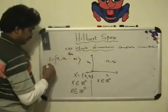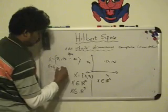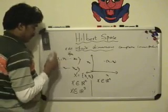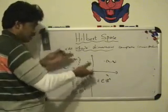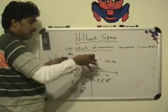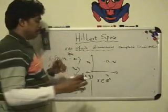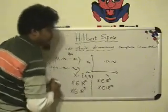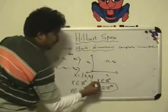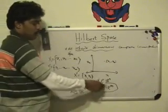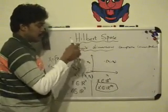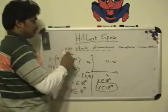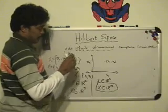And if we take n going to infinity — imagine expanding this into an infinite dimensional space — then x belongs to R^infinity. So this is basically an infinite dimensional space: x belongs to infinite dimensional space. So again, Hilbert's space is an infinite dimensional space.